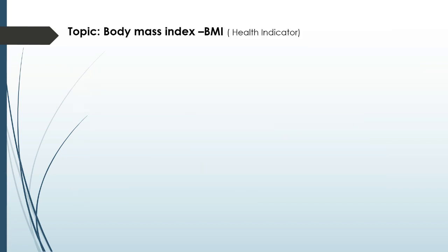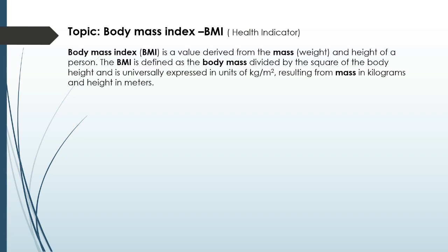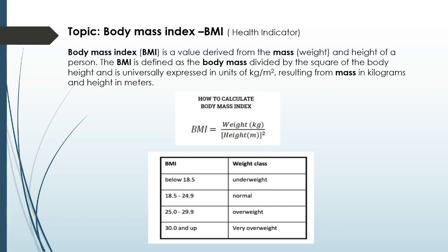In your book on page 13, activity 3 is about body mass index, which is one very important health indicator. Body mass index is a value derived from the mass (weight) and height of a person. BMI is defined as the body mass divided by the square of the body height, expressed in units of kg per square metre. Using this formula, if the final value is less than 18.5, the person is underweight; between 18.5 and 24.9 is normal; 25 to 29.9 is overweight; and 30 and above is the obese category, which is not a healthy indicator.